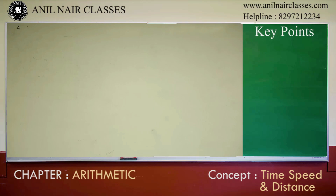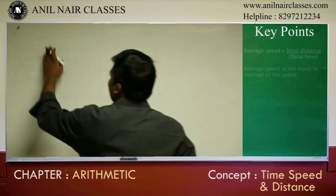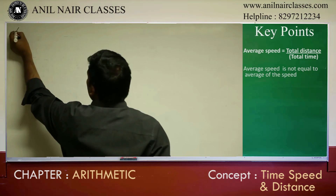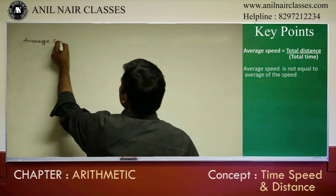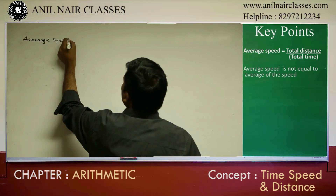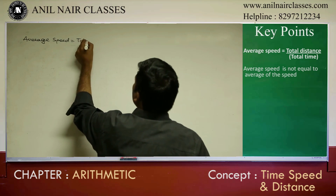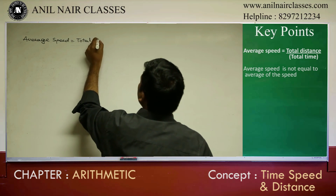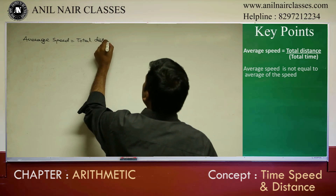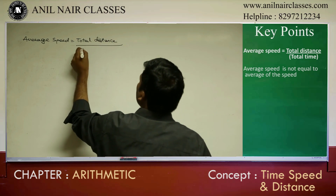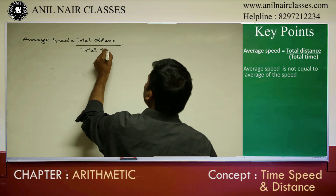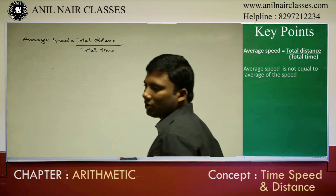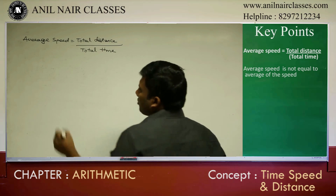Average speed equals total distance by total time. We will apply this formula to solve the next 5 to 6 problems.